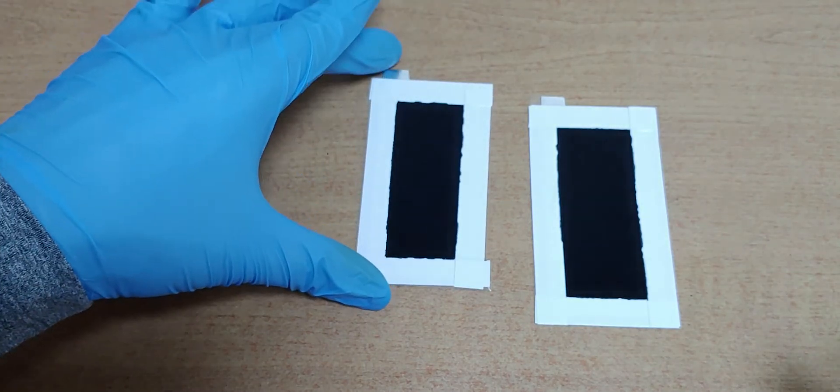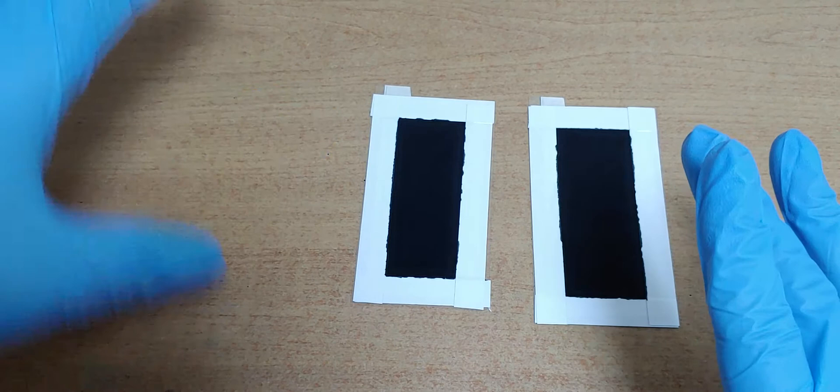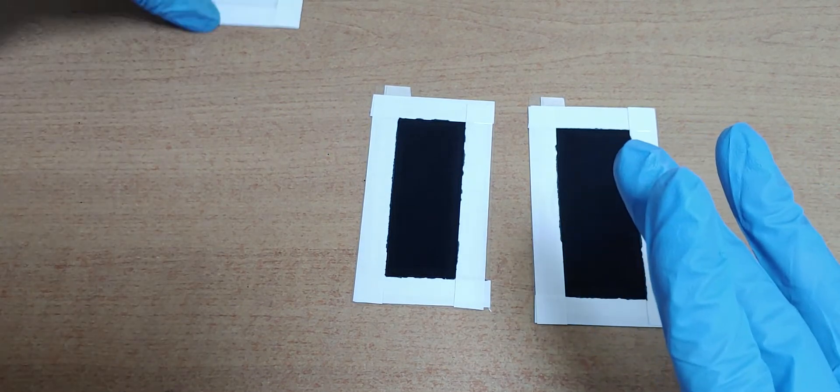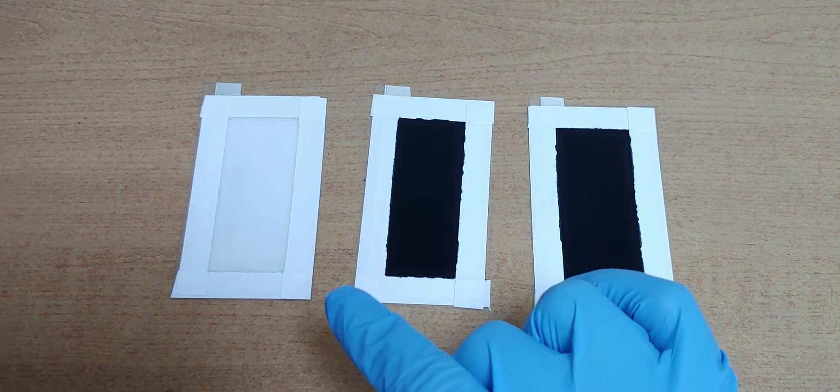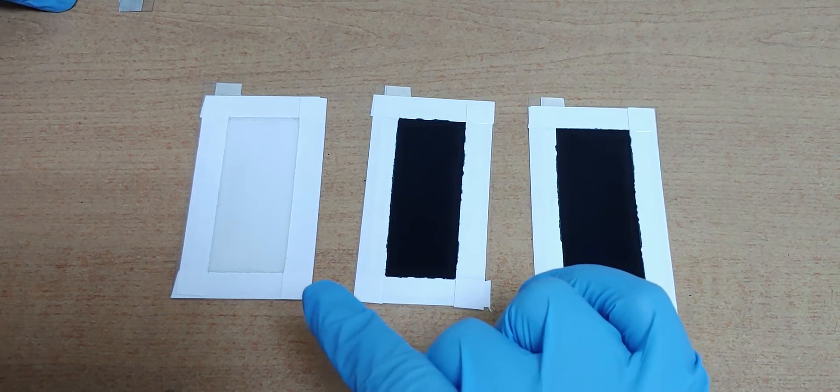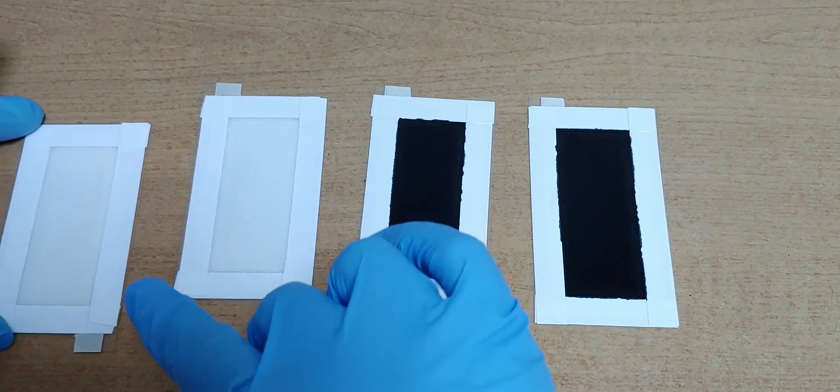I prepared two graphene electrodes because I have to do two kinds of experiments. And this is sugar. If it is dry, it will become a solid state electrolyte.